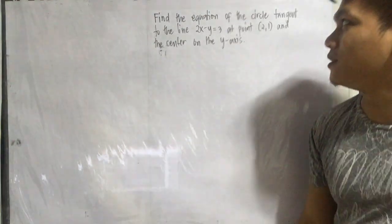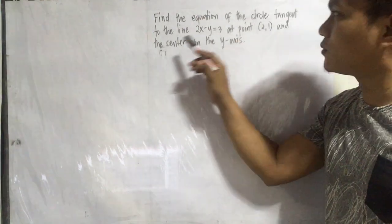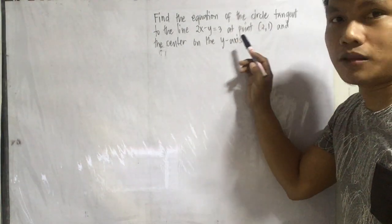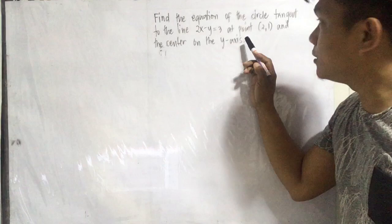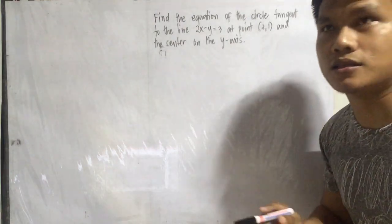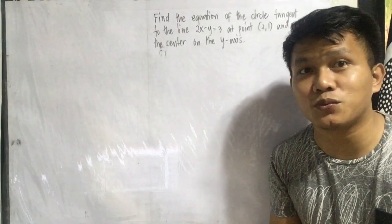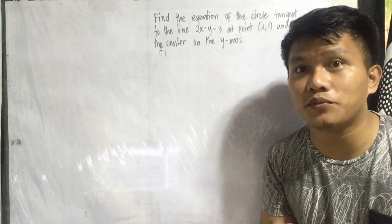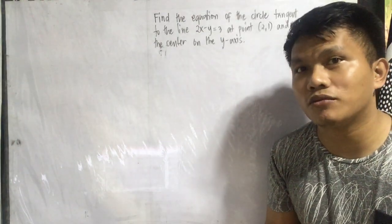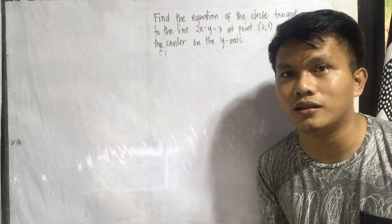So in standard form and in the general form. Specifically, we have the standard form: x minus h squared plus y minus k squared is equal to r squared. So let us use that standard form in order for us to arrive at the equation of the circle given this problem.